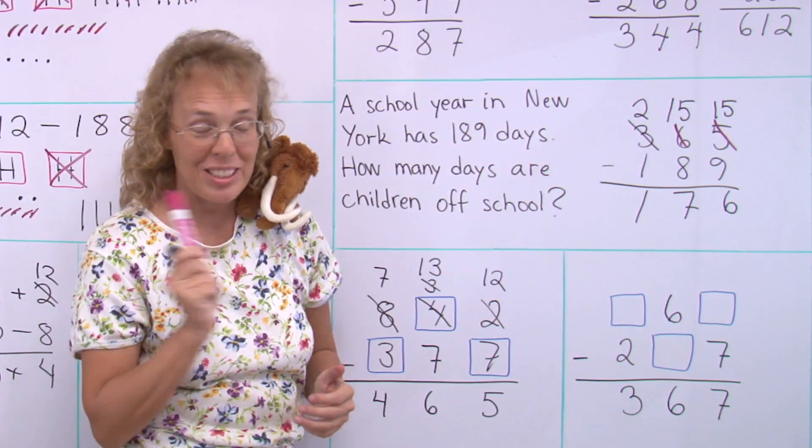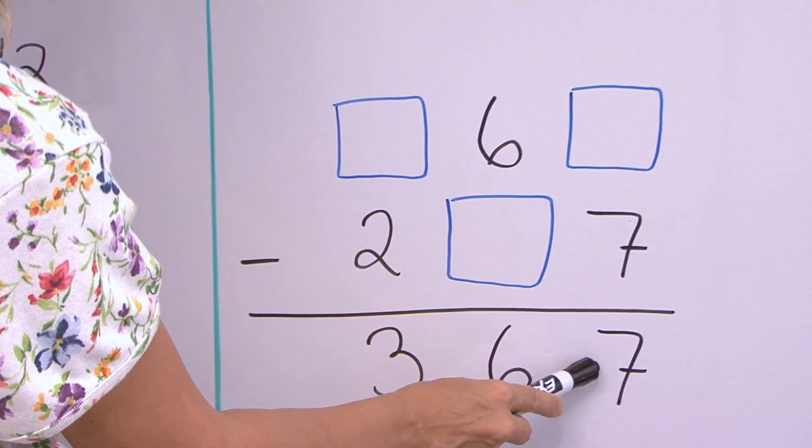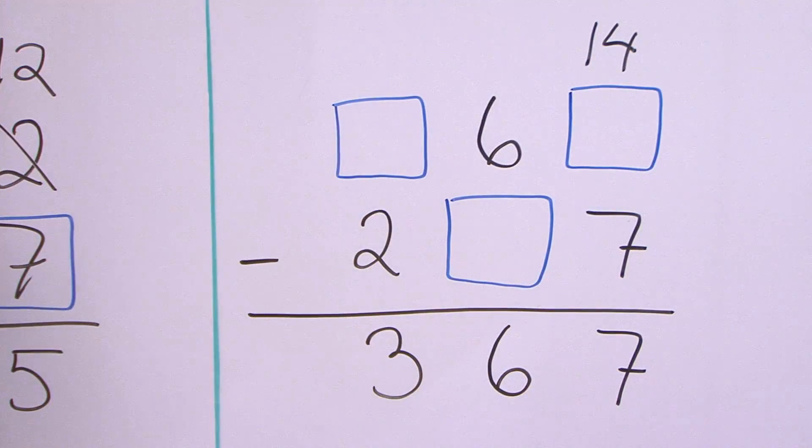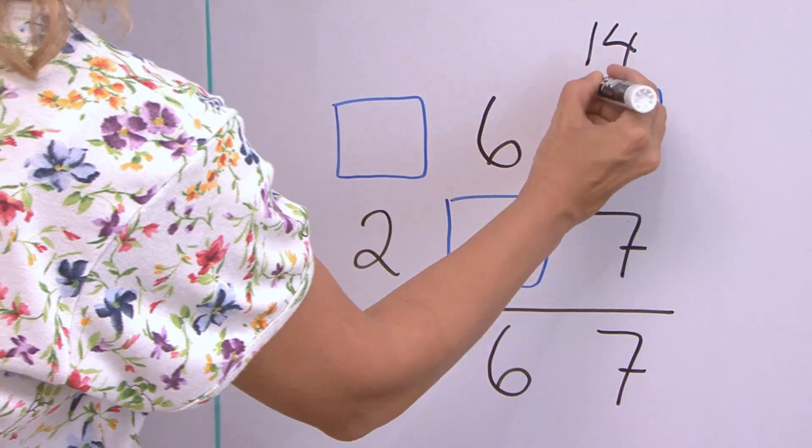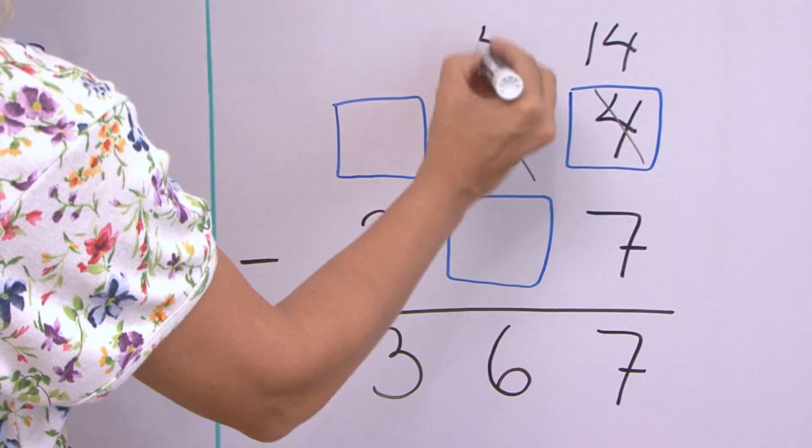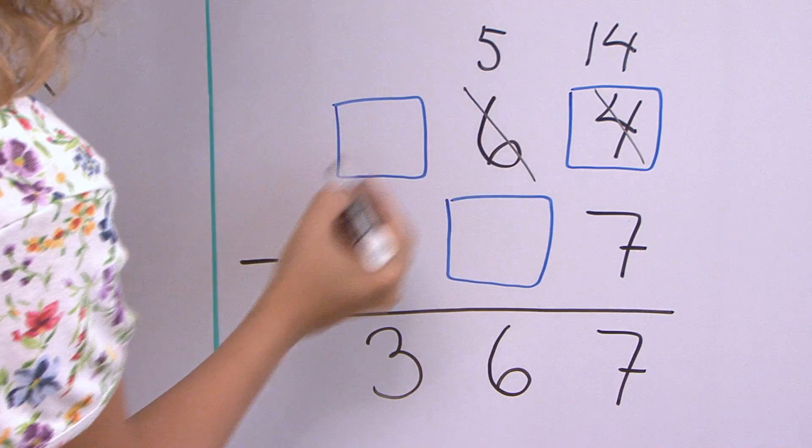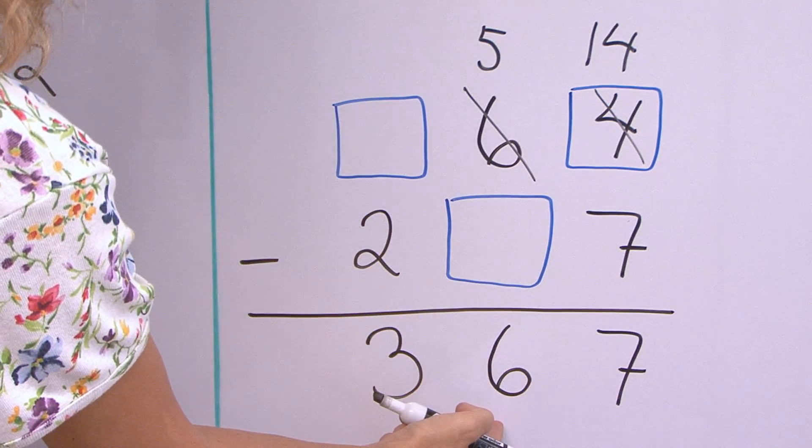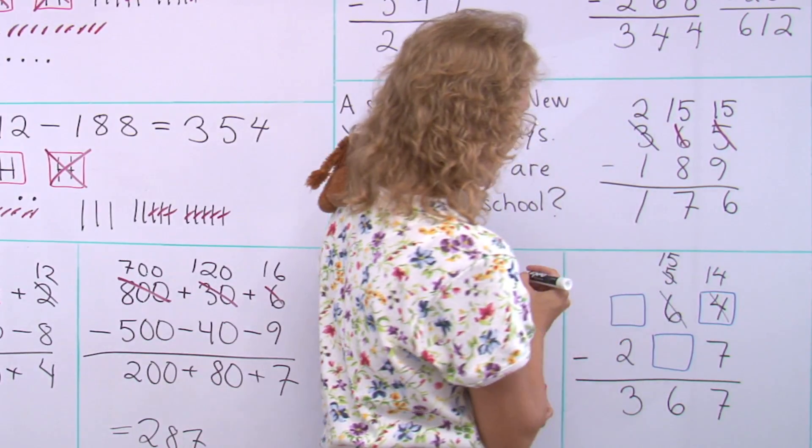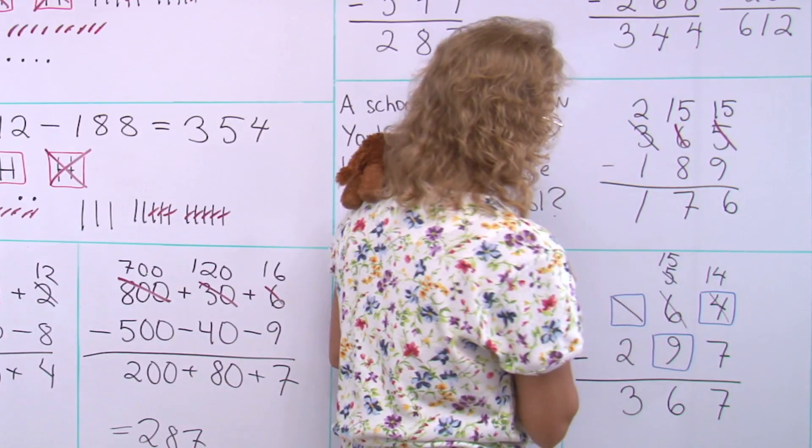Then the last puzzle. Again, something minus seven leaves seven. That must be fourteen. Fourteen minus seven. So that means there was four here, but it got crossed out. There was a regrouping. And so this one must have been five here. Follow me so far? And then five minus something leaves six. Again, there must have been a regrouping where there was actually fifteen minus nine. And so something was here, got crossed out.